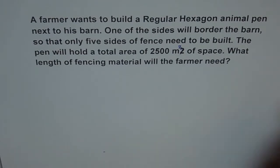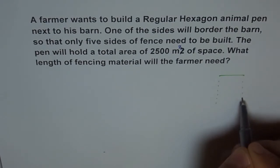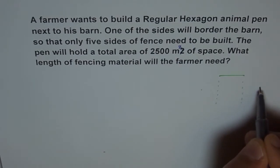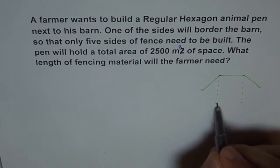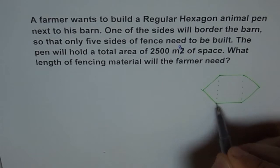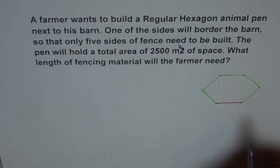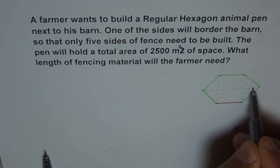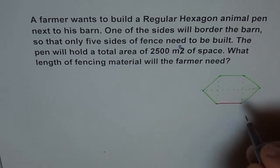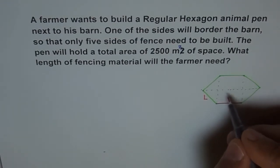Let's first draw our hexagon and figure out how it looks and what we should be doing. So regular hexagon means all sides are equal. Now it says that one side is with the barn, so let's say this side is already fenced — we don't need this side. Now we need to find the other sides. Let's say the length of each side is L. And now let's say this is our center. Let's make a triangle here.